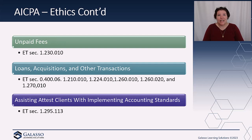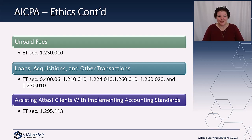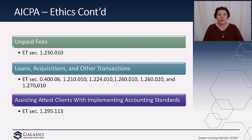They addressed updated unpaid fees, moving to a more principles-based approach instead of the old rules-based approach. They also revised the definitions and interpretations related to loans, acquisitions, and other transactions — moving away from some bright lines there as well. Effective December 31st of 2022 was the guidance on assisting attest clients with implementing accounting standards, really addressing what you can and cannot do. Leases was a hot topic, and post-revenue recognition they wanted to ensure the auditor wasn't crossing the line in implementation, particularly for smaller entities.